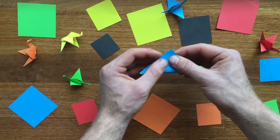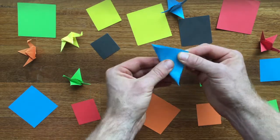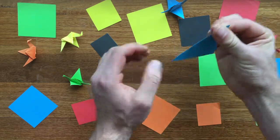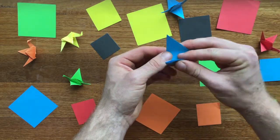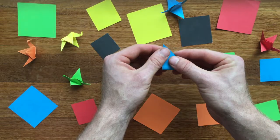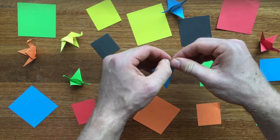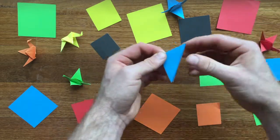The first fold is to create a big triangle, again ensuring a crisp fold. The second fold is to create a second smaller triangle, again as precise as you can with every fold.